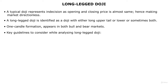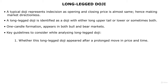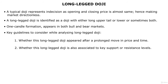First, whether this long-legged doji appeared after a prolonged move in price and time. When a long-legged doji appears after an uptrend or downtrend it reflects confusion among buyers and sellers, hence pointing to a possible reversal. Second, whether this long-legged doji is also associated with key support or resistance levels. A long-legged doji seen at a key level offers even higher probability of a trend reversal.